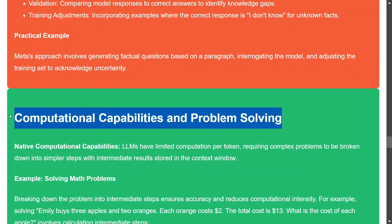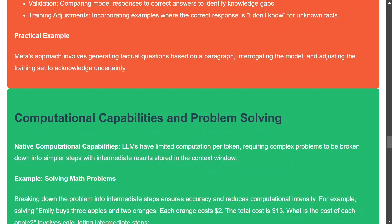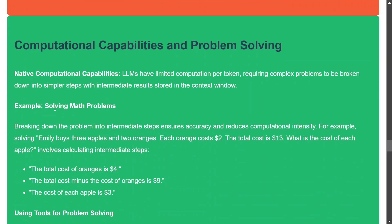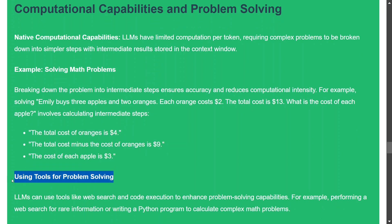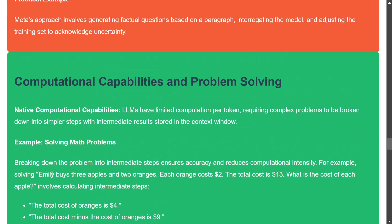LLMs have limited native computational capabilities — complex problems need to be broken into simpler steps. For example, a math problem like 'Emily buys 3 apples and 2 oranges, each orange costs $2, the total is $13, what is the cost of an apple?' should be broken down step by step, relating to chain-of-thought reasoning. Tools like web search or code execution can also be attached to enhance problem solving.